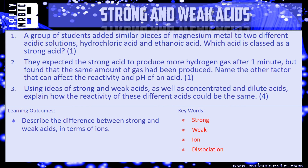Question three — this is a four-marker: using ideas of strong and weak acids, as well as concentrated and dilute acids, explain how the reactivity of these different acids could be the same. Think about: one's a strong acid, one's a weak acid — how can you make that reactivity the same? Have a go, and we'll go through it and mark it in a little while.